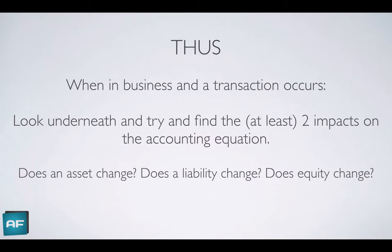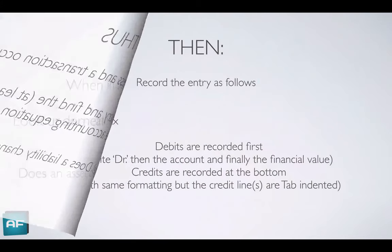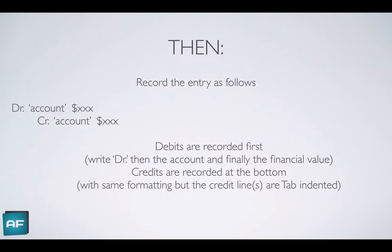As you progress in an accounting degree, you'll be doing more and more complex debits and credits through journal entries. When you record a journal entry, debits are recorded first, flush to the left-hand side — you put DR followed by the account name and the financial value. Credits are recorded below the debit and are indented — you tab once or twice. This indenting is just a visual convention to make journal entries easier to read; it's the way it's always been done.